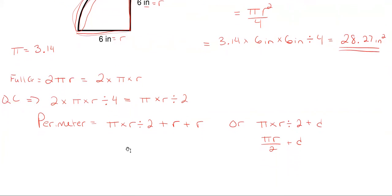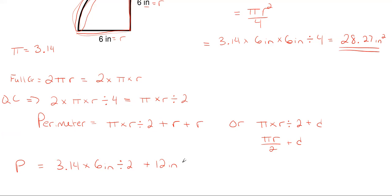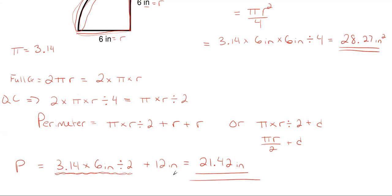Plugging in our values: P = 3.14 times 6 inches, divided by 2, then add the diameter, which is 6 inches plus 6 inches = 12 inches. Make sure to compute the curved portion first, then add the 12 inches. This gives a total perimeter of 21.42 inches. For units, perimeter is a distance measure, so we use inches — not squared — matching whatever distance unit we're working with.